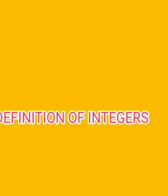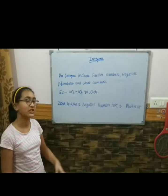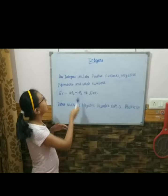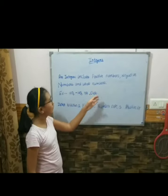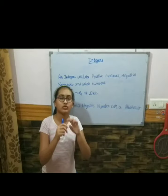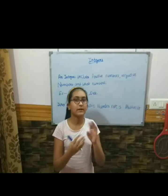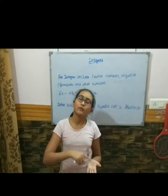Hey everyone, so today we are going to learn integers, so let's get started. If we understand integers, integers include positive numbers, negative numbers, and whole numbers. So there are a combination of positive numbers, negative numbers, and whole numbers.